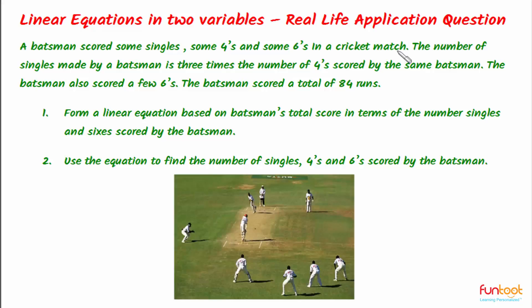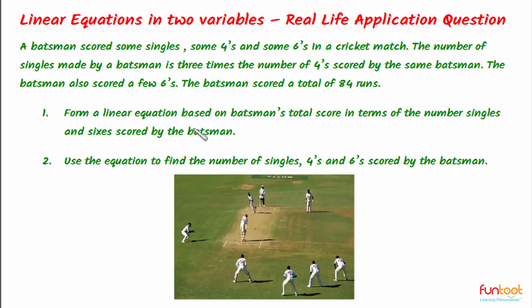Let's do this problem. A batsman scored some singles, some fours and some sixes in a cricket match. The number of singles made by a batsman is three times the number of fours scored by the same batsman. The batsman also scored a few sixes. The batsman scored a total of 84 runs. We have to form a linear equation based on the batsman's total score in terms of number of singles and sixes scored by the batsman.